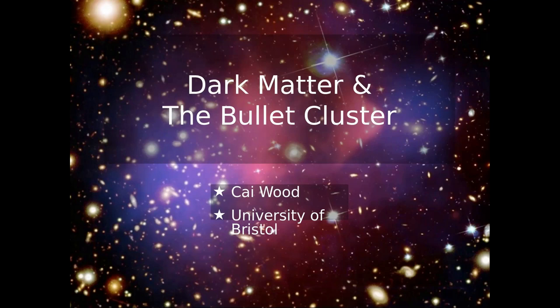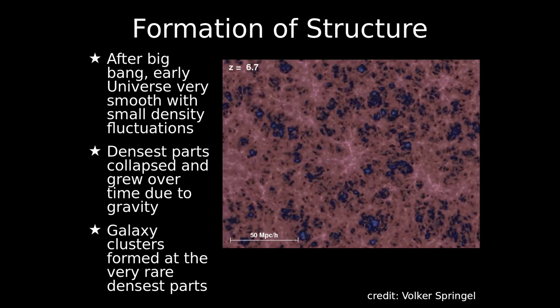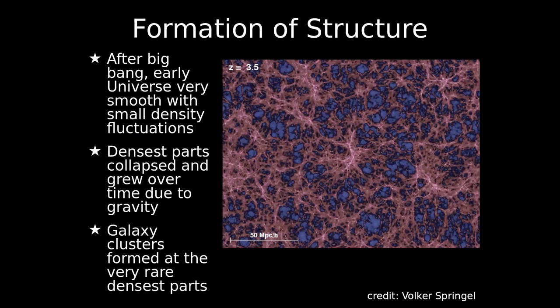We start with the Big Bang, and we've got a universe that's quite smooth. There's not too much difference in it. Going to the simulation now, you see quite a smooth universe, but there are small density fluctuations. Some bits of matter are just closer to each other than other bits, and over time these slightly denser regions have collapsed in, merged due to gravity, and you get this structure growing — that's what the simulation is showing.